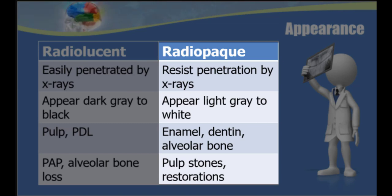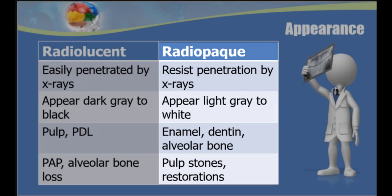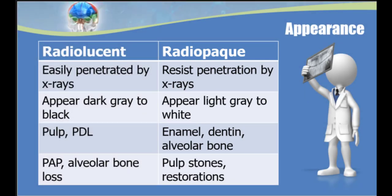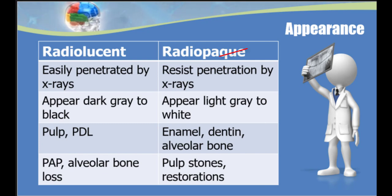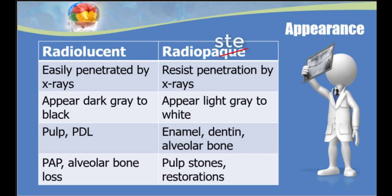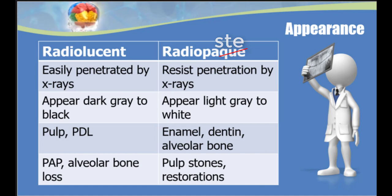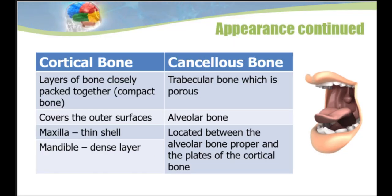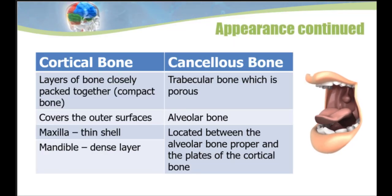Other radiopaque structures might include pulp stones or dental restorations. A memory trick: I would substitute 'radiopaque' with 'radiopaste,' since paste is white — it helps remember that radiopaque structures are whiter in nature. When we talk about the alveolar structures, we'll be looking at two different types of bone: cortical bone and cancellous bone.